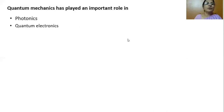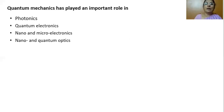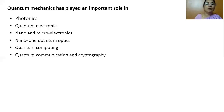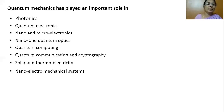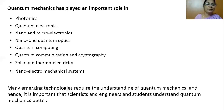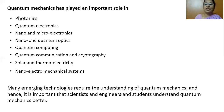Quantum mechanics could explain all the evolving new branches of physics. They are photonics, quantum electronics, nano and microelectronics, nano and quantum optics, quantum computing, quantum communication and cryptography, solar and thermoelectricity, and nano electromechanical systems, and we can list so many more. Thus many emerging technologies require the understanding of quantum mechanics, and hence it is important that scientists, engineers, and students understand quantum mechanics in a better way.